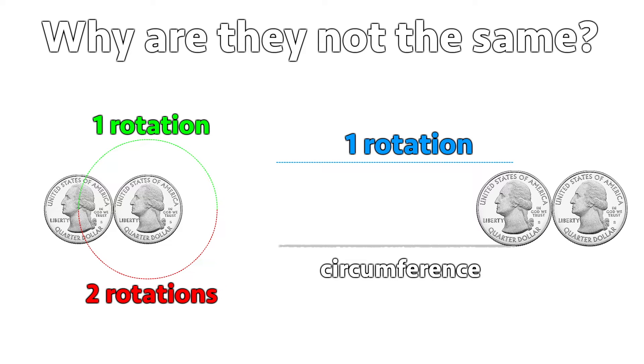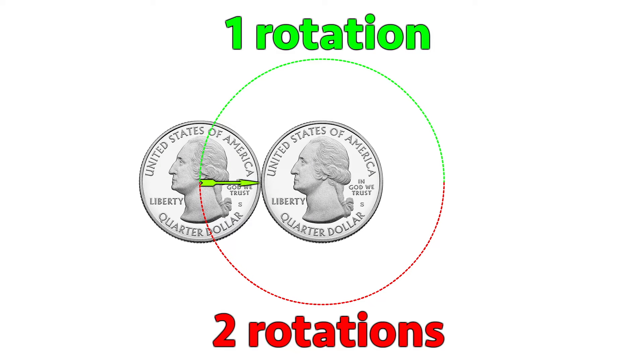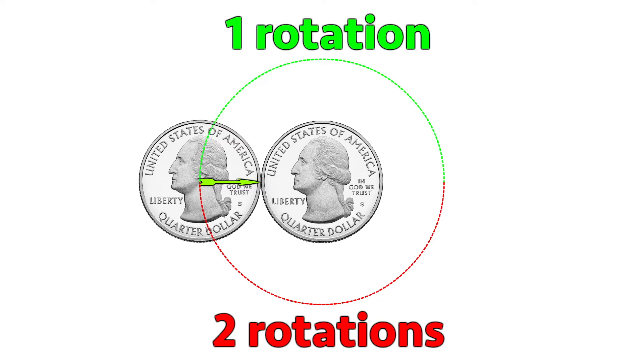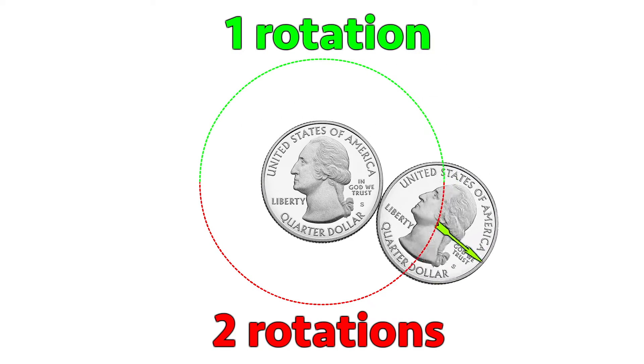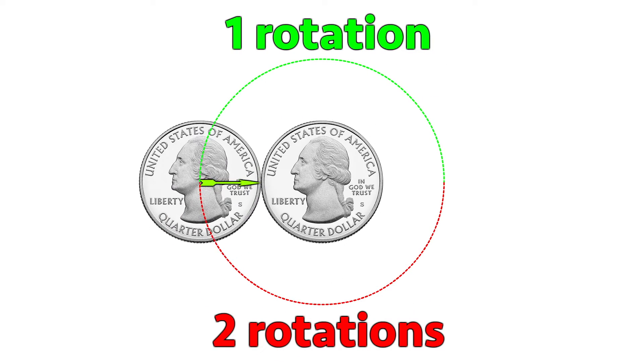The amazing thing here is perspective. Let's mark the radius of the rotating quarter so that it points towards the right. Now let's describe the rotation as when the radius touches the circle again. And we can see that it does so only once.